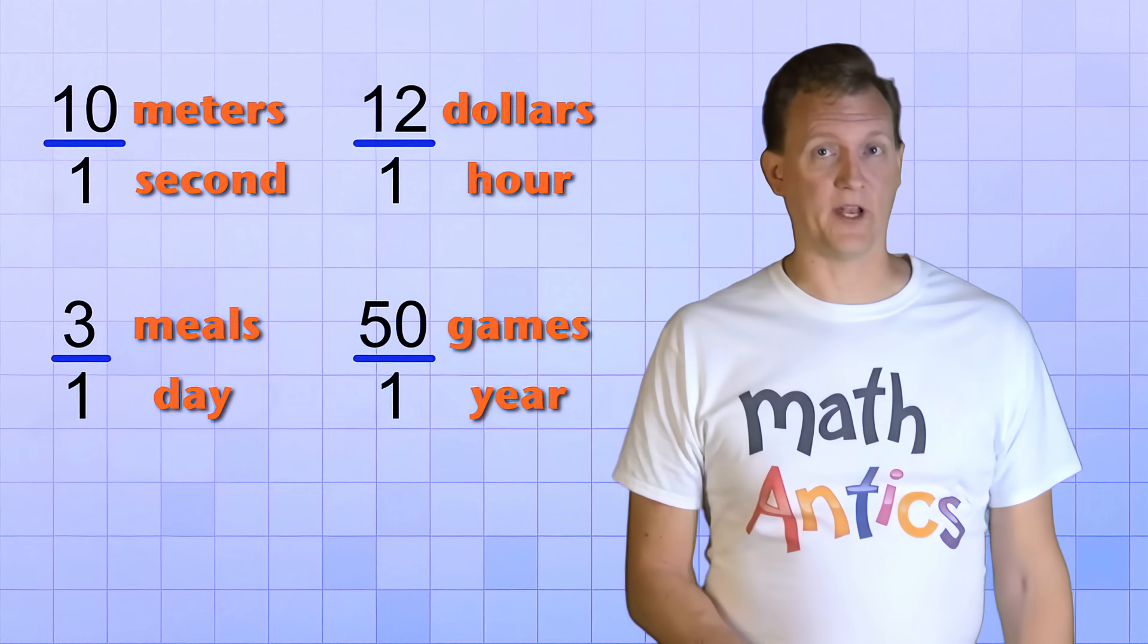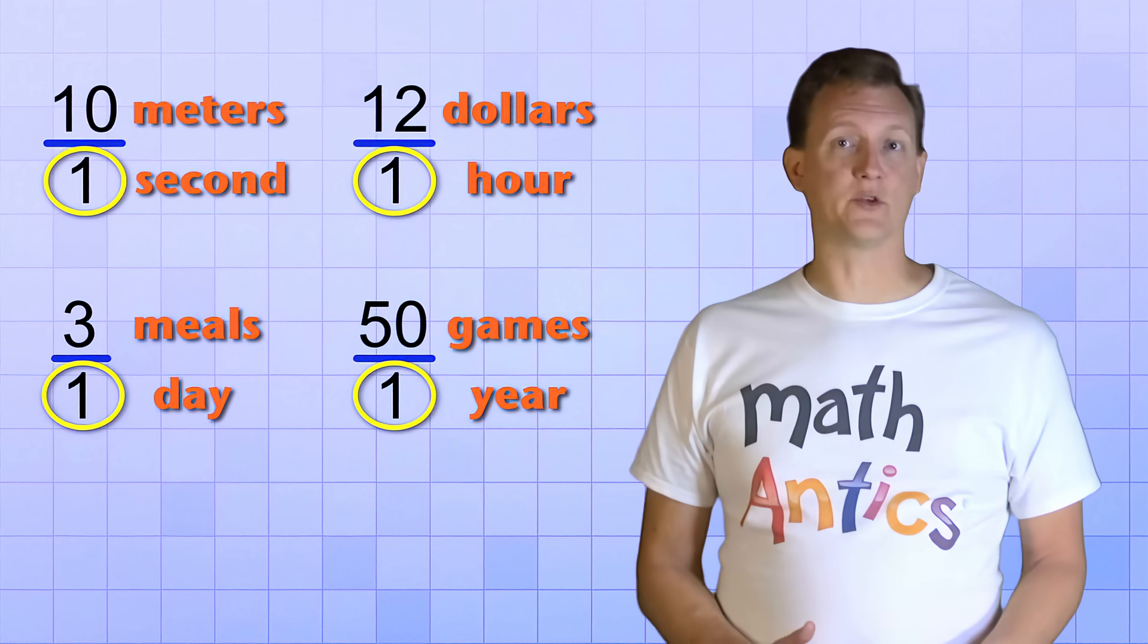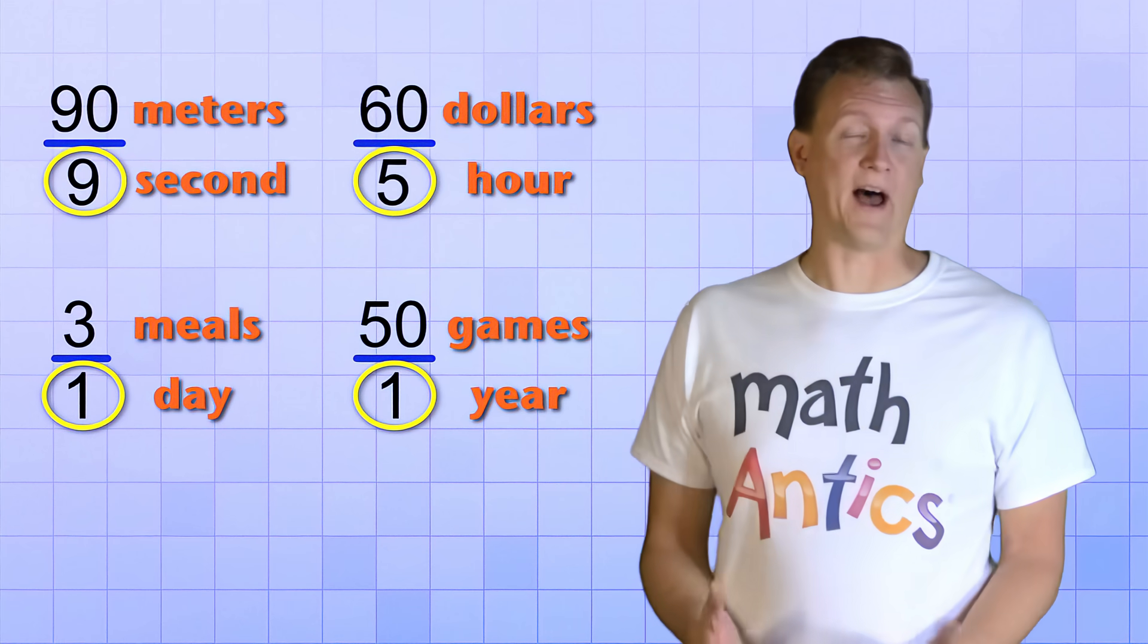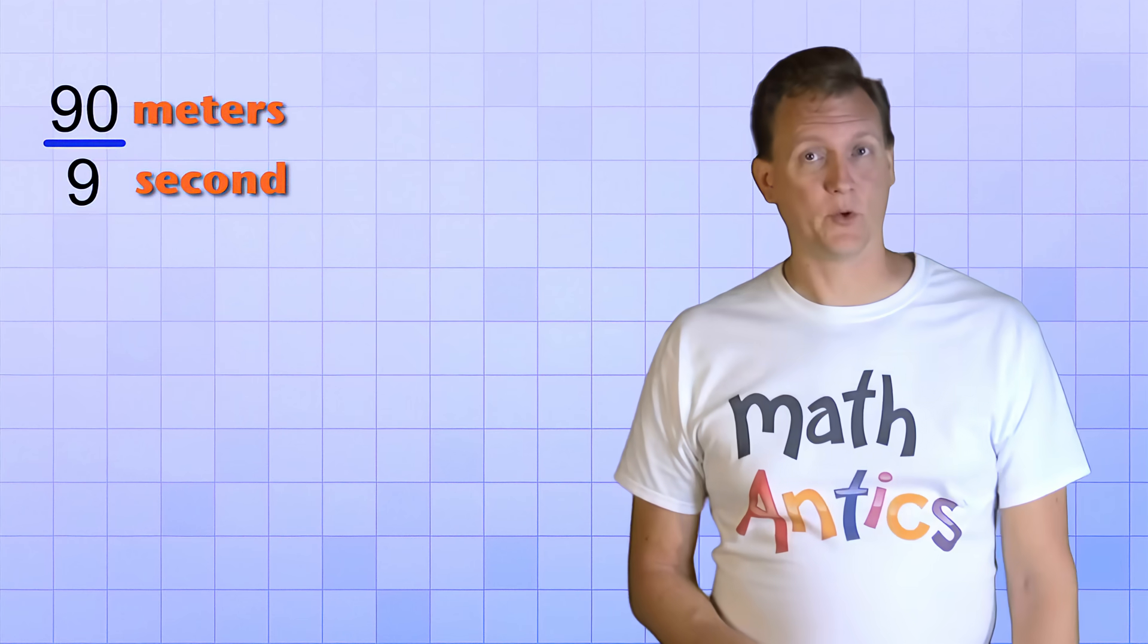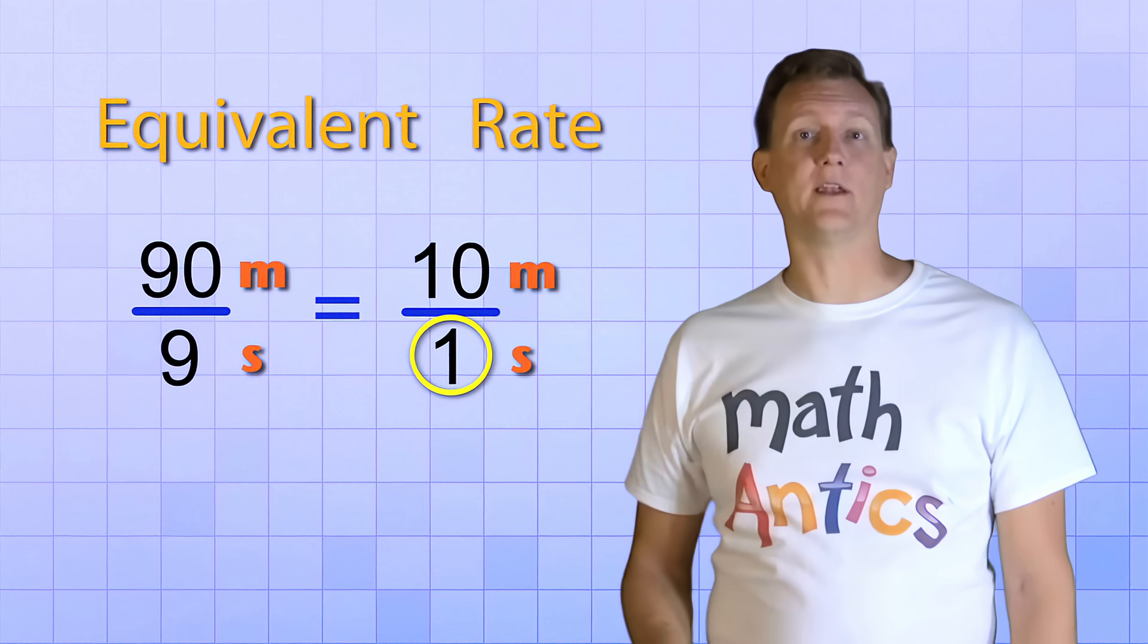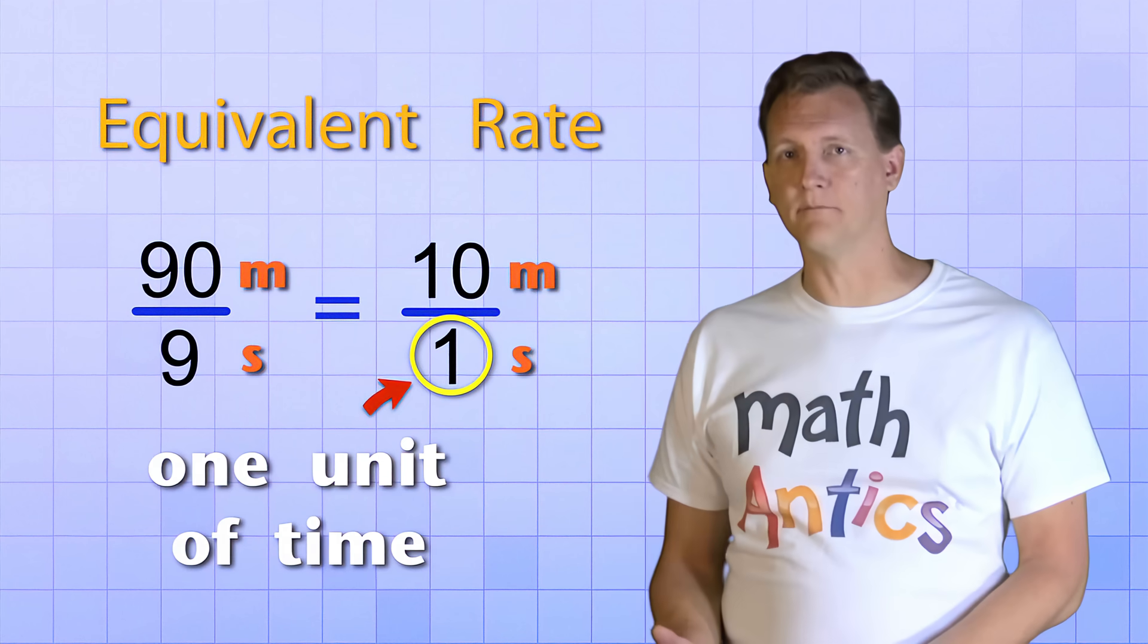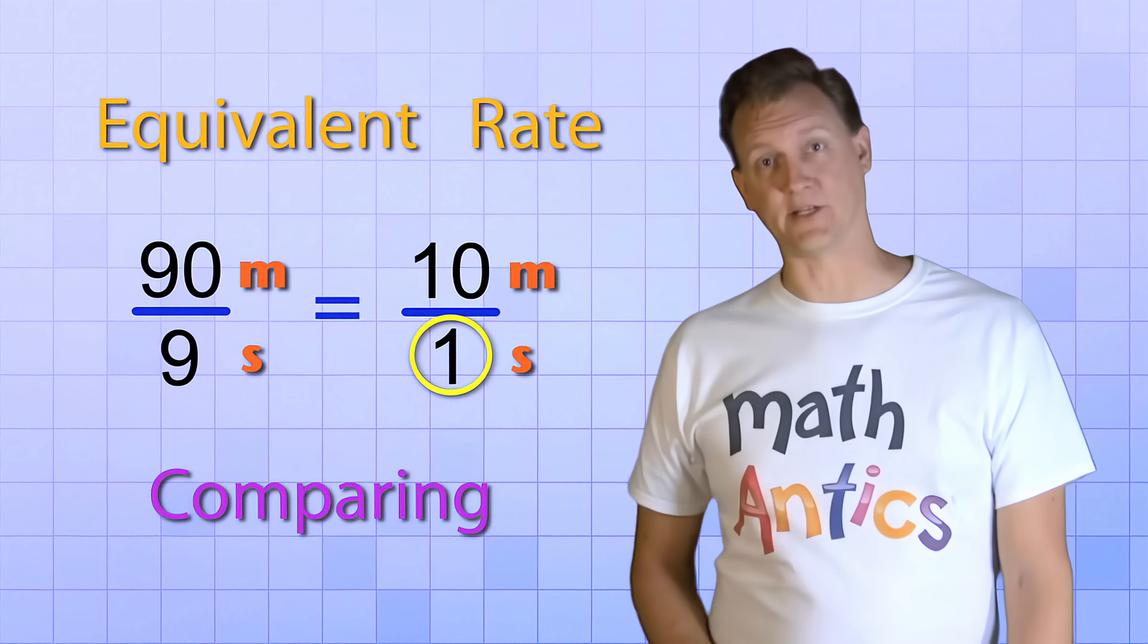So that's simple enough. But you might be wondering, why are the bottom numbers of all these rates 1? Couldn't you have a rate like 90 meters per 9 seconds, or 60 dollars per 5 hours? We sure could. But most of the time, when we have rates like that, we want to convert them into an equivalent rate that has 1 as the bottom number. That's because whenever the bottom number represents only one unit of time, like 1 hour or 1 day, it makes comparing different rates much easier.